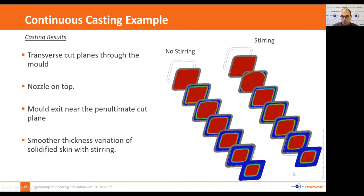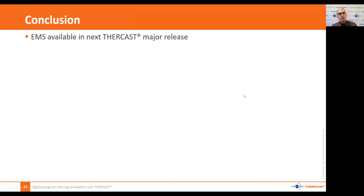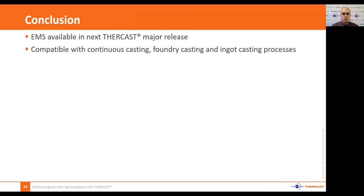Without stirring, you expect a skin to appear on all sides more or less at the same time. With stirring, solidification starts in the corners and gradually proceeds along the flat surfaces. To conclude, the electromagnetic stirring functionality will be available in the next Turcast major release. What I've shown here for continuous casting will be available for other types of processes, and it can be used in Turcast for foundry casting or ingot casting.